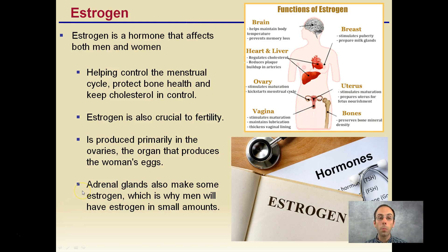Moving on to estrogen, which is typically considered the female hormone, it affects both men and women. It helps control the menstrual cycle, protects bone health, and keeps cholesterol in control. It's also critical to fertility. It's produced primarily in the ovaries, which produce a woman's eggs. However, it's also produced in the adrenal glands, which is why both men and women will have estrogen — at least in small amounts for men — because both have adrenal glands located near the kidneys.